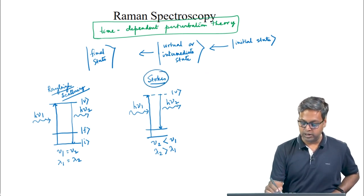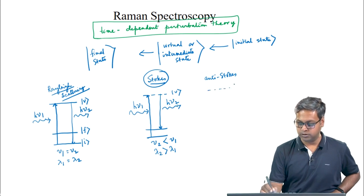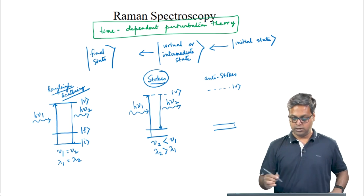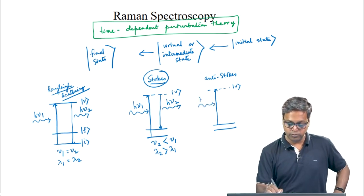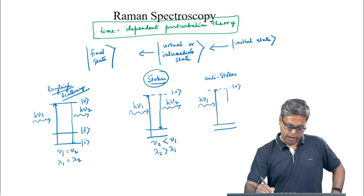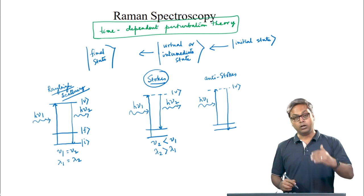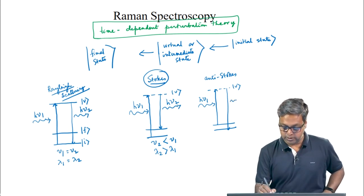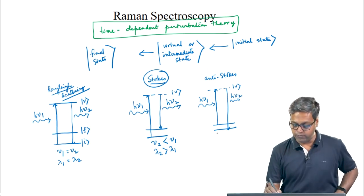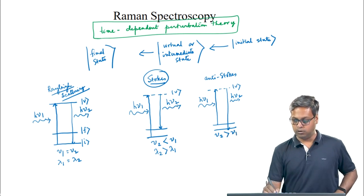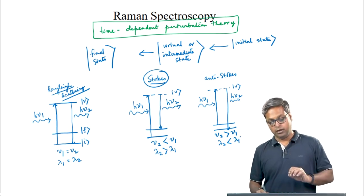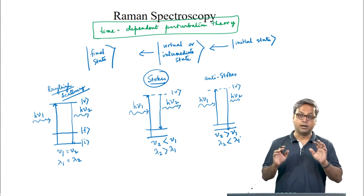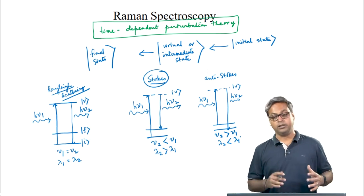For the anti-Stokes lines: we have the virtual state and two stationary states. The initial transition happens from the upper state with energy hν₁, and the final transition happens from the virtual state to the lower energy state with energy hν₂. So ν₂ is greater than ν₁, or λ₂ is less than λ₁. This is the anti-Stokes case where the wavelength of the scattered light is shorter than the wavelength of the incident light.